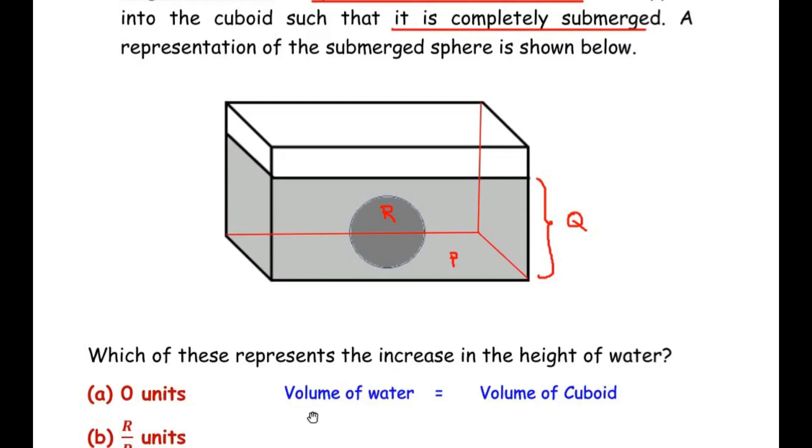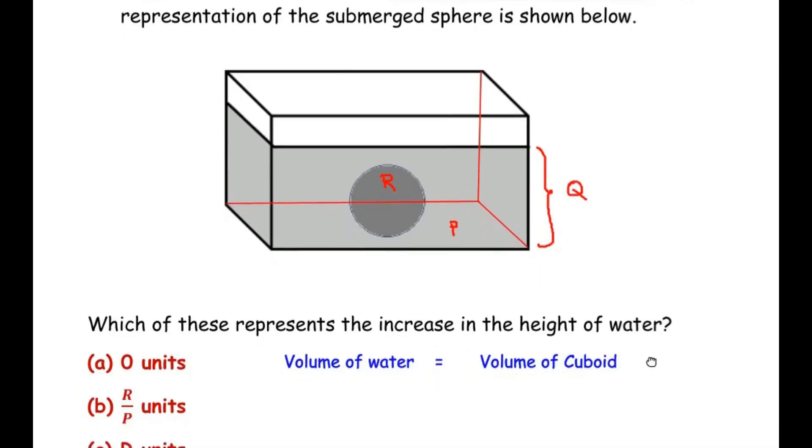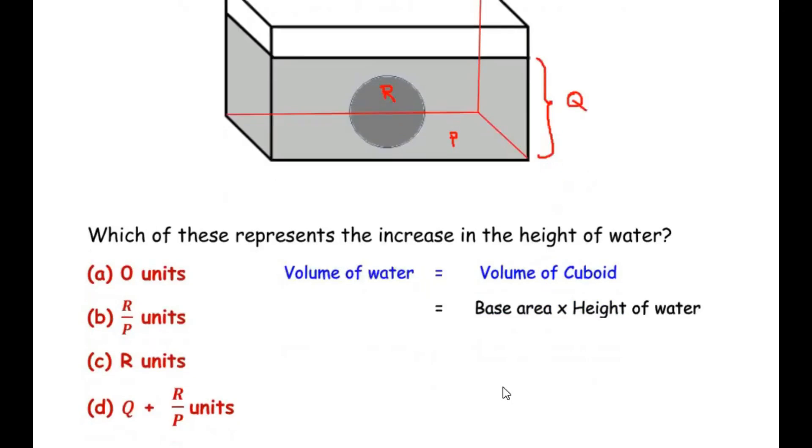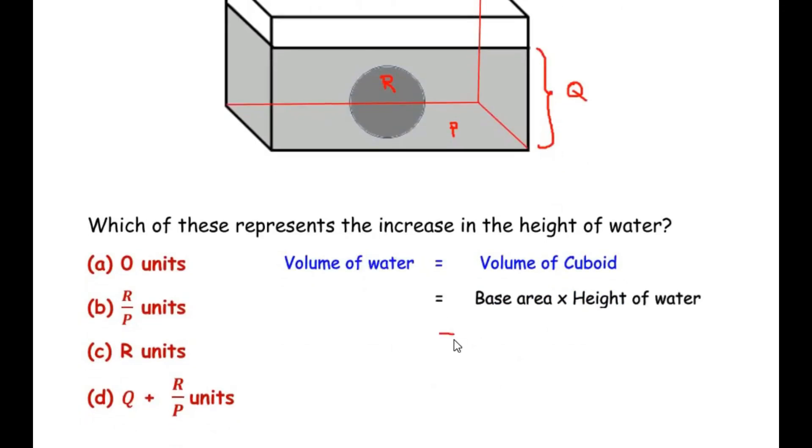Now here since we are considering the volume of the water, we are going to take the base area times the height of the water. So let me write over here. Now the base area is given as P in the question. So let us write here P times.